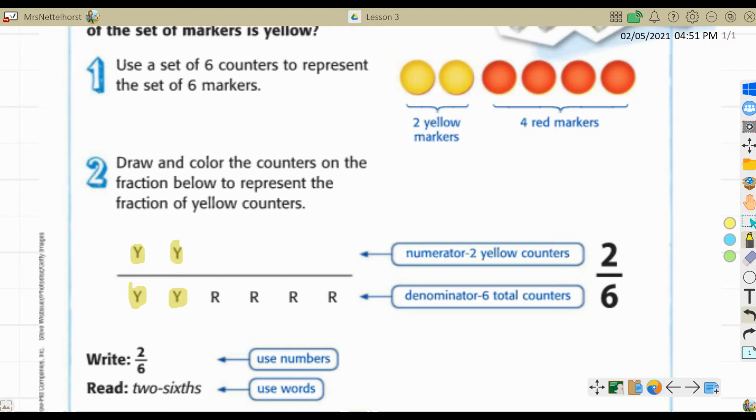I don't have a red highlighter, so I will use pink because that's close enough. And in distance learning, close enough is good enough. So I have two yellow markers out of the six markers that I have all together. So the numerator is two. The denominator is six to represent all of the markers.